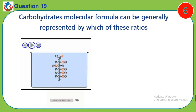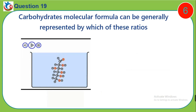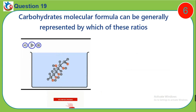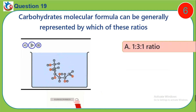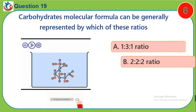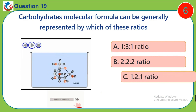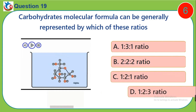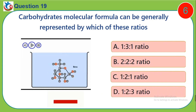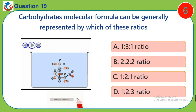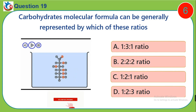Question 19. Carbohydrate's molecular formula can be generally represented by which of these ratios? A. 1:3:1 ratio. B. 2:2:2 ratio. C. 1:2:1 ratio. D. 1:2:3 ratio.